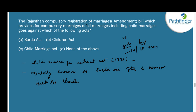Next question: The Rajasthan Compulsory Registration of Marriages Amendment Bill, which provides for compulsory registration of marriages including child marriages, goes against which act? The correct answer is the Sharada Act, also known as the Child Marriage Restraint Act. This was passed in 1929 to avoid child marriages in India. According to this act, the minimum age for girls was 14 years and for boys was 18 years. Today, the minimum age prescribed for girls is 18 years and for boys is 21 years. This act was popularly known as the Sharada Act after its advocate Harbilas Sharada.